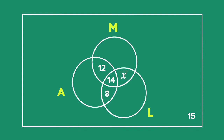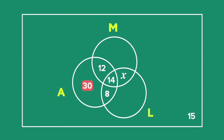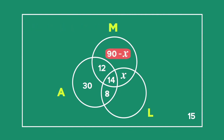We are told that 64 learners take Accounting. To calculate the number that still needs to go into set A, we calculate 64 minus 12 minus 14 minus 8, which equals 30. So 30 learners take Accounting only. We are told that 116 learners take Maths. To calculate the missing number in set M, we calculate 116 minus 12 minus 14 minus X, which gives us 90 minus X learners taking Maths only.